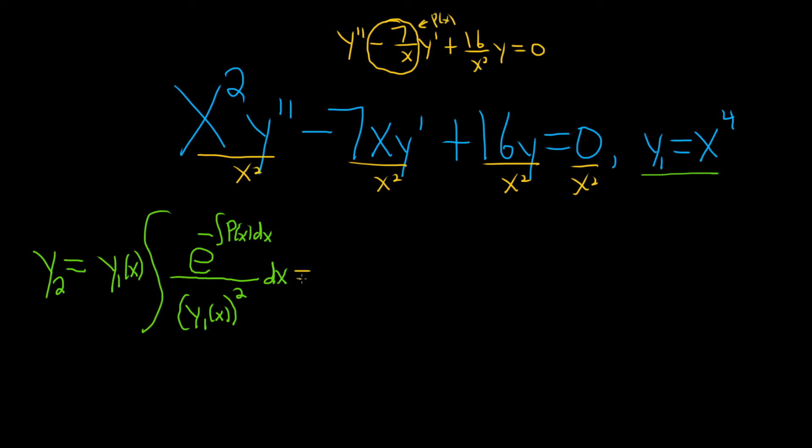So this is equal to x to the fourth, because that's what our y₁ is, the integral of. So big P is negative 7 over x, but there's already a negative here. So it'll be e to the integral of 7 over x dx. And it's over x to the fourth, and then that's being squared, right? It's being squared, and then we have our dx.